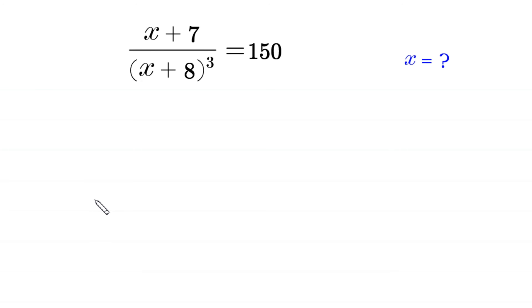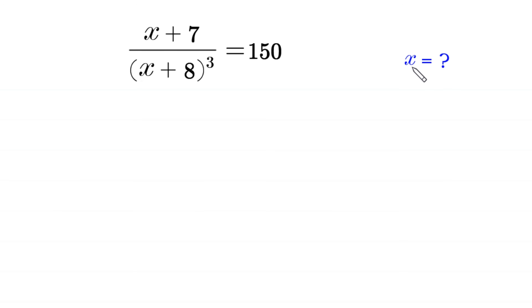Welcome to this tutorial on how to solve this algebra equation: ((x + 7) / (x + 8))³ = 150. We need to find all possible values of x.